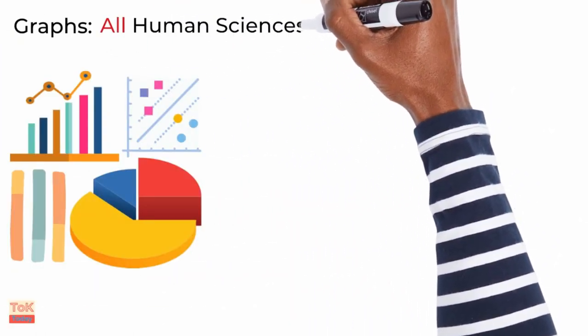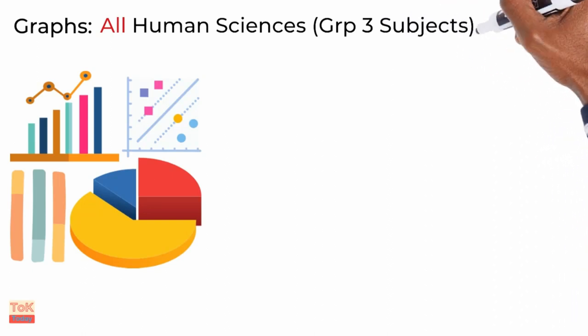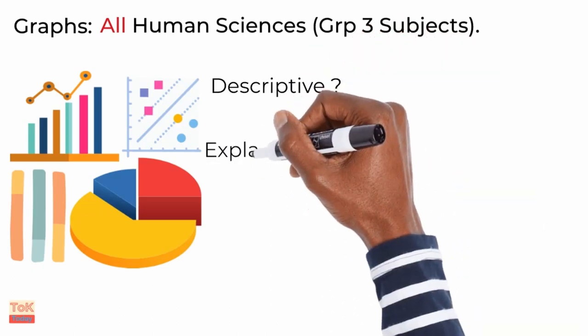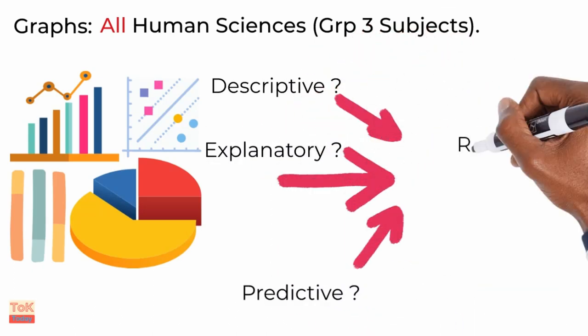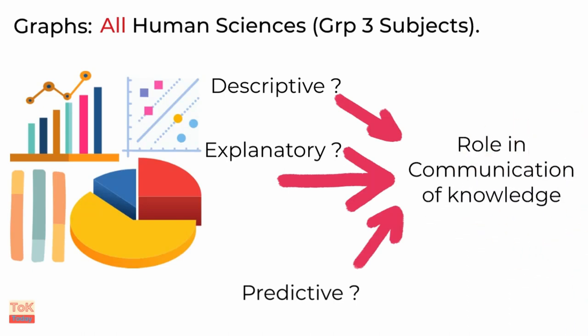Moving swiftly on, we can consider the use of graphs in all of the human sciences. You could base your discussion around the specific roles of graphs in communication. Are they more descriptive or explanatory or prognostic? If you're tempted to jump into the many ways in which graphs can be deceptive and misleading, remember to also explore the many advantages of graphs in communicating knowledge.